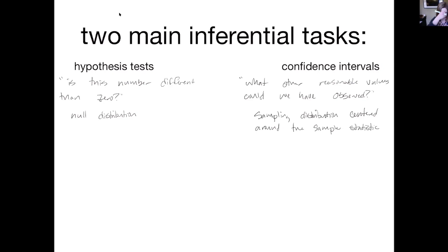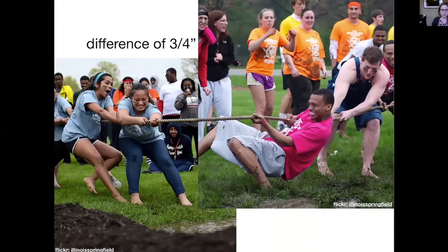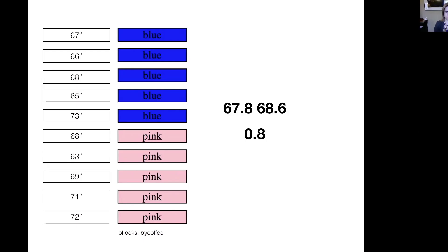To illustrate this, I'm going to show you two different comparisons of groups. The first one involves ants — imagine two groups of ants where we found an average difference of three quarters of an inch in length. As humans, we know about ants, and we think that seems like a really big difference — likely statistically significant. On the other hand, I have two tug-of-war teams, the blue shirt and pink shirt people, and I measured their heights and found an average difference of three quarters of an inch. We don't think that's probably statistically significant — that could just be chance.